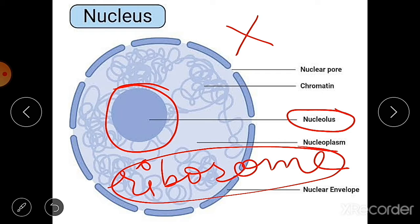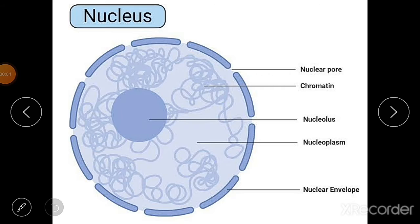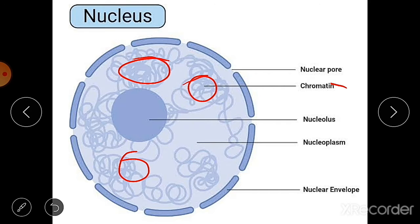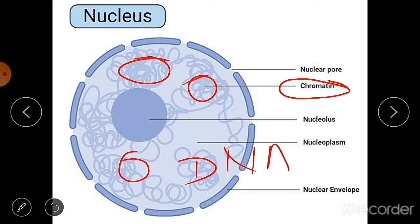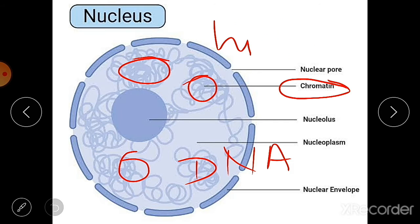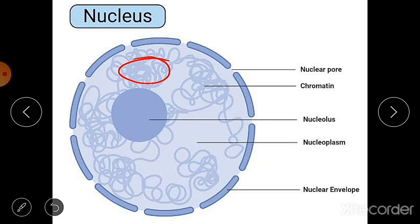Chromatin is a thin, thread-like, intertwined mass of chromosome material. It is composed of genetic material — DNA — and proteins, mainly histone proteins. The chromatin material is visible as an entangled mass of thread-like structures.